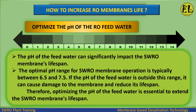The pH of the feed water can significantly impact the SWRO membrane's lifespan. The optimal pH range for SWRO membrane operation is typically between 6.5 and 7.5. If the pH of the feed water is outside this range, it can cause damage to the membrane and reduce its lifespan. Therefore, optimizing the feed water pH is essential to extend the SWRO membrane's lifespan.